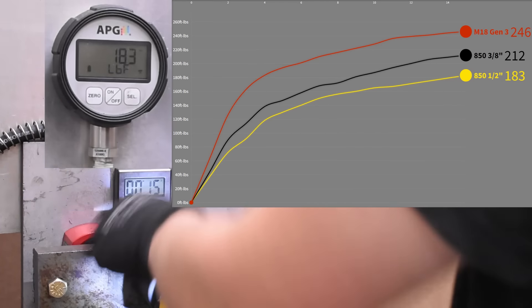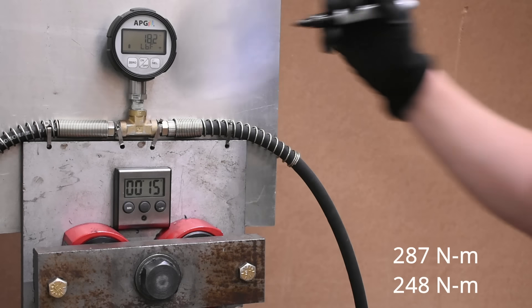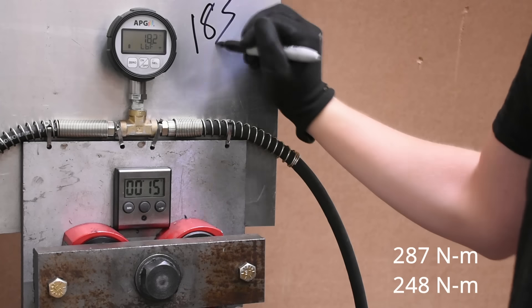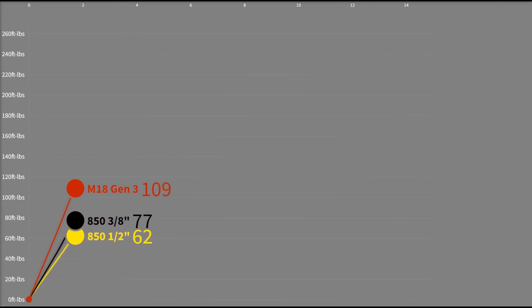That three-eighths at 212 foot pounds, basically performing like a different tool altogether once it's attached to a smaller anvil, but neither really touching that Gen 3's area under the curve at all.